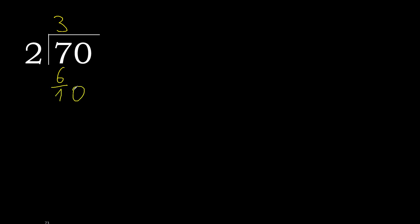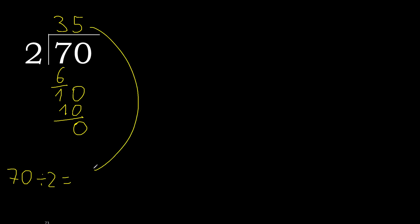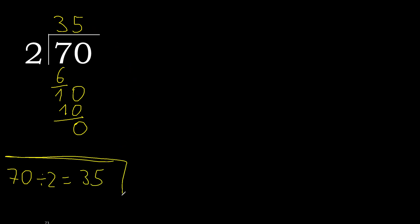Next: bring down the 0, making 10. 2 multiplied by 5 is 10. 10 minus 10 is 0. The remainder is 0, so we finish here. Therefore, 70 divided by 2 is 35.